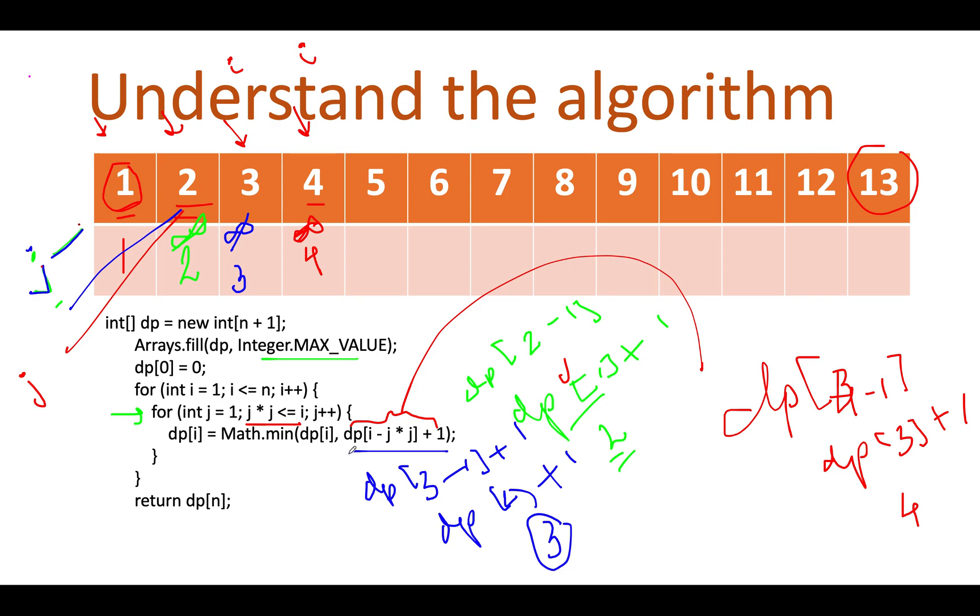What we are going to do, we'll calculate this expression for j equals to two. That turns out to be equal to dp of four minus two square. Two square is four. So dp of zero. dp of zero is zero. We know this and we'll add one to it corresponding to this value. And this turns out to be equal to one. So one is lower than four. So we'll replace this by one.